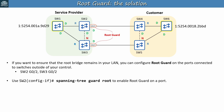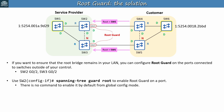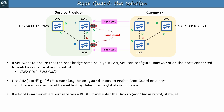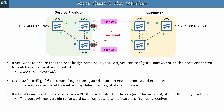Unlike PortFast, BPDU Guard, and BPDU Filter, there is no command to enable it by default from global config mode. You can only configure it in interface config mode. Now that root guard is enabled on SW2 and SW3's G0/2 ports, what happens when they receive BPDUs from SW4 and SW5 claiming that SW6 is the root bridge? If a root guard-enabled port receives a superior BPDU, it will enter the broken, root inconsistent state, effectively disabling it. Basically this means that the port won't be able to forward frames, and will discard any frames it receives. All traffic is cut off. And SW1, SW2, and SW3 won't accept SW6 as the root bridge. So even though the service provider and customer LANs are physically connected, they can't communicate.